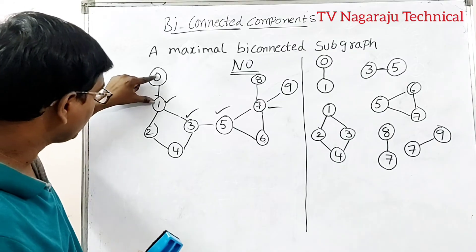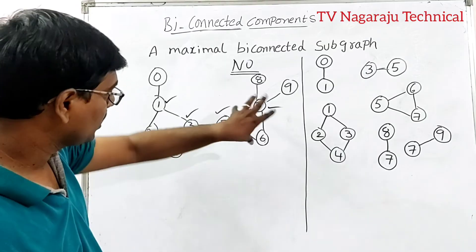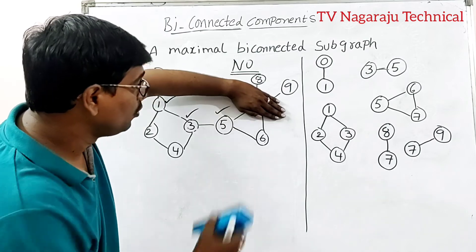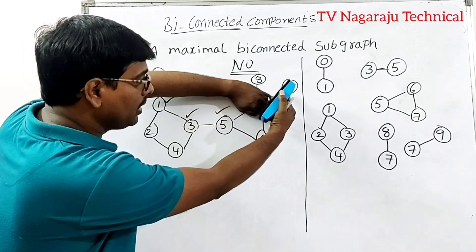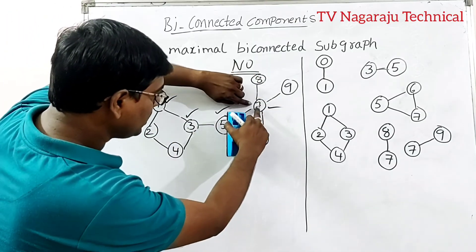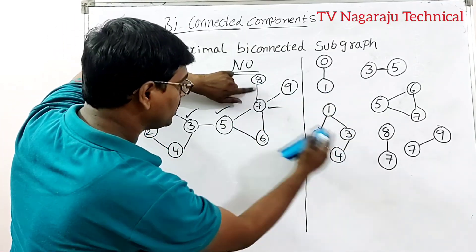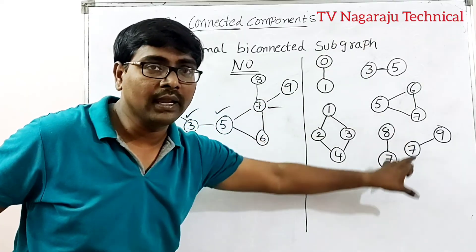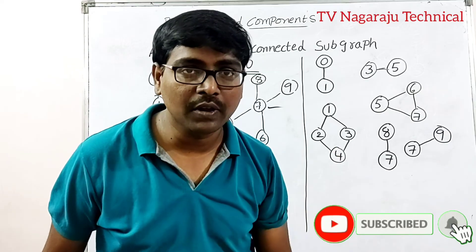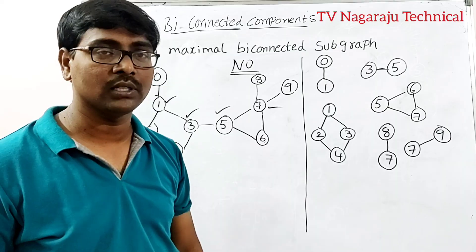Now consider the bi-connected components: zero-one is one part, one-two-three-four is the second part, three-to-five is the third part, five-six is another part, and seven-eight, seven-nine are separate components — since removing vertex 7 leaves eight as one component and nine as another. Seven is connected to eight and seven is connected to nine. These are the bi-connected components. A graph which does not consist of any articulation point — this is the way to find the bi-connected components.